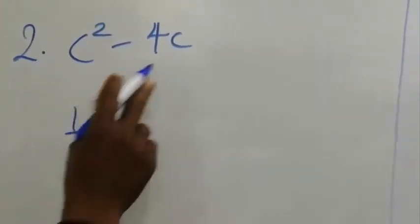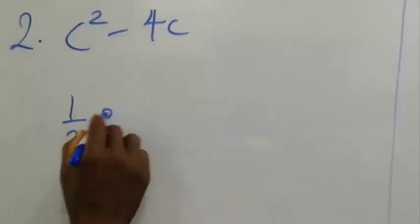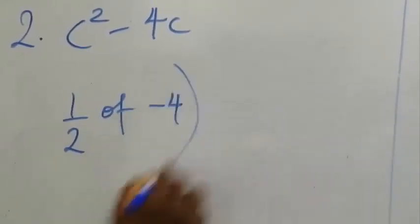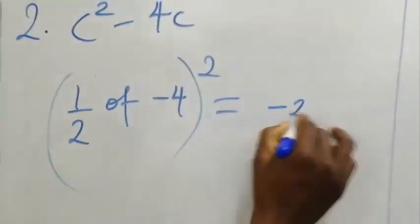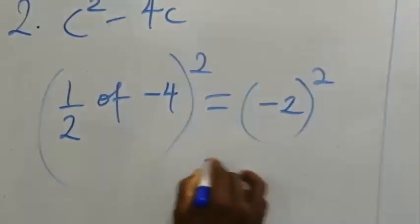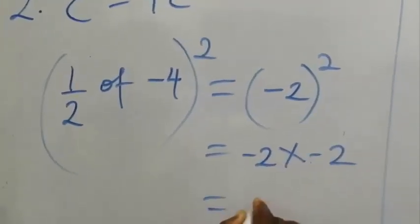Remember, we need to find half of the coefficient of c, which is half of minus 4, and square all. Half of minus 4, that's minus 2 all squared. Minus 2 all squared is minus 2 multiplied by minus 2, which is equal to plus 4.